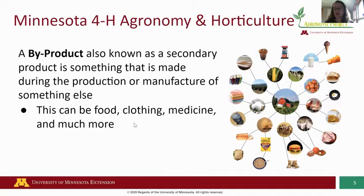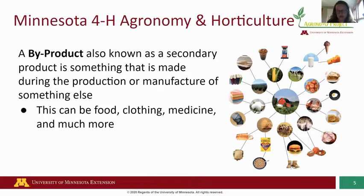A byproduct, also known as a secondary product, is something that is made during the production or manufacture of something else. Some examples include food, clothing, medicine, silks, soap, and so much more. Now we'll go over some examples of different agricultural byproducts.